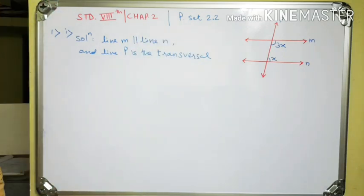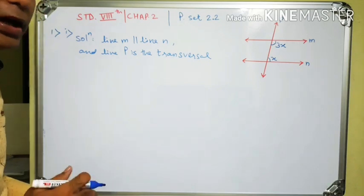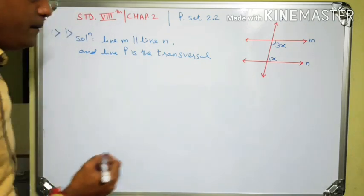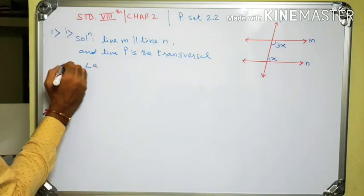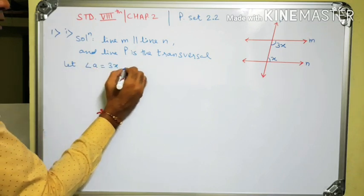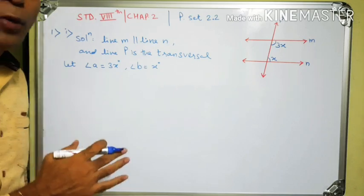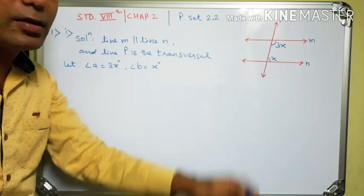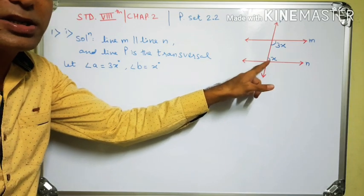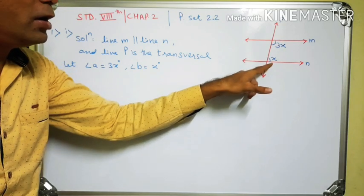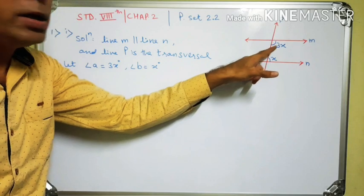We have studied the properties of corresponding angles, alternate angles, and interior angles. Let angle A equal 3x and angle B equal x degrees. To apply the correct property, we first identify what type of angle pair these are — whether corresponding, alternate, or interior. These are interior angles.